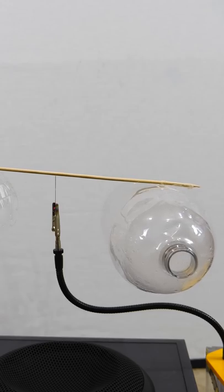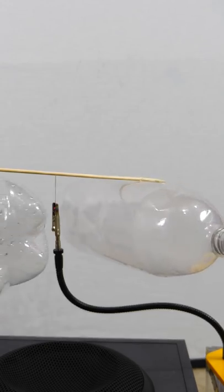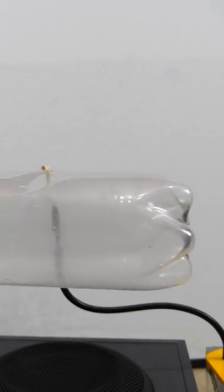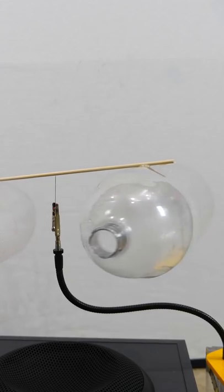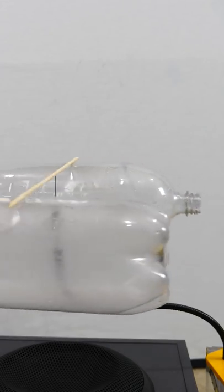So if you blow into the bottle, it creates that frequency, but if you play that frequency at the bottle, it'll blow air out of the bottle and you can move it around in a circle. So you can actually generate thrust with sound.